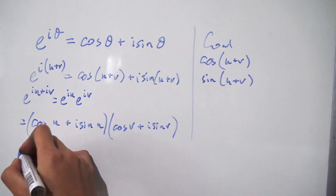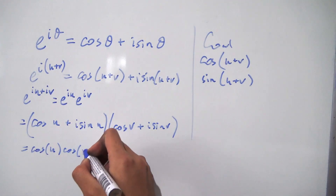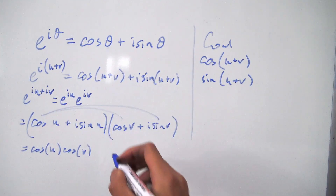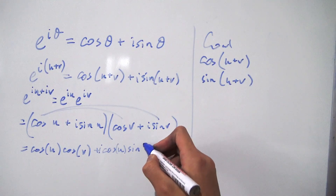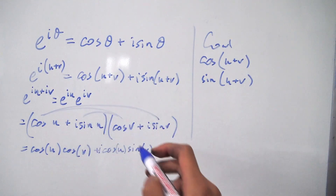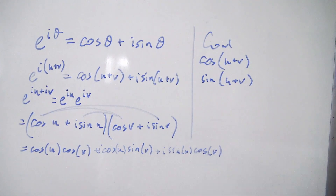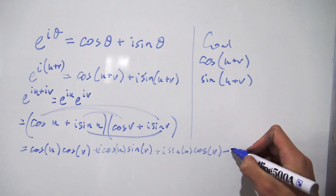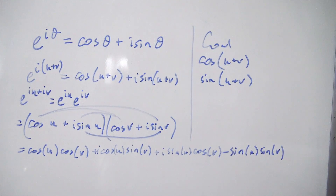Now we expand everything out. We get cosine of u times cosine of v, then i times cosine of u times sine of v, then i times sine of u times cosine of v, and finally i times i times sine of u times sine of v. Since i times i equals negative 1, the last term becomes negative sine of u times sine of v. This is a big mess, but we can rewrite it in terms of real and imaginary parts.